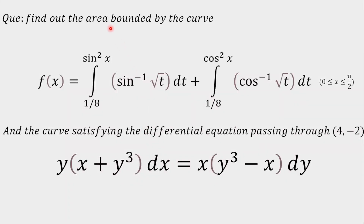Today we're going to solve a question on mixed topics — area under the curve and differential equation. The question is: find out the area bounded by two curves. The first curve is given as f of x in the form of an integration, with x belonging to 0 to π/2. The second curve is given in the form of a differential equation, and the curve is passing through (4, −2). Let's start with the first curve.